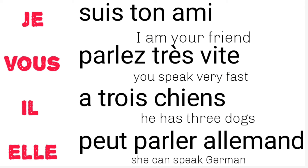Let me give a few examples. 'You are sweet' — here the personal pronoun is 'tu.' Next, 'you speak very fast' — the pronoun here is 'vous.' Next, 'il a trois chiens' — he has three dogs, so our pronoun is 'il.' And 'elle parle' — she speaks — we use 'elle' because it is a singular feminine subject.